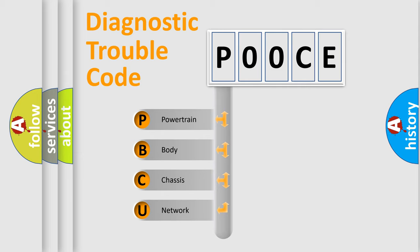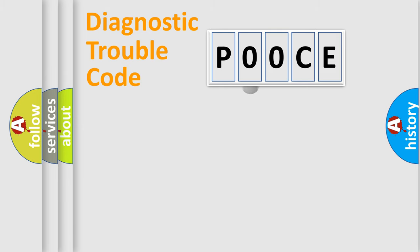We divide the electric system of automobile into four basic units: Powertrain, Body, Chassis, and Network. This distribution is defined in the first character code.